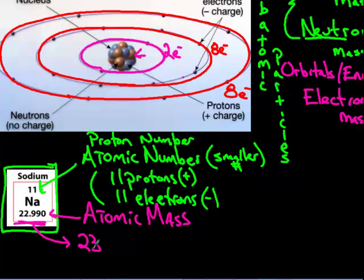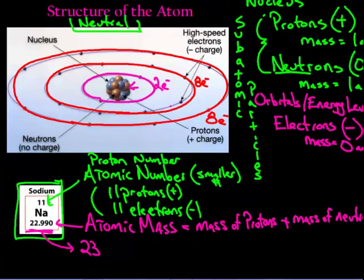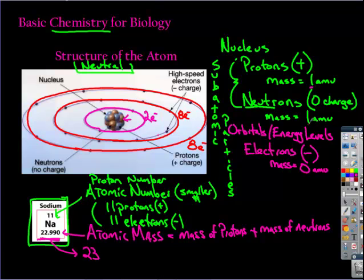Now what the atomic mass is, that equals the mass of the protons plus the mass of the neutrons. And since protons have a mass of one and neutrons have a mass of one, it becomes a very easy calculation.